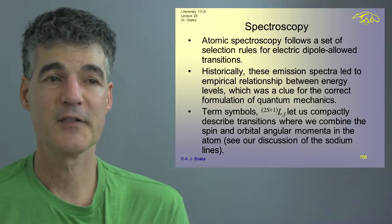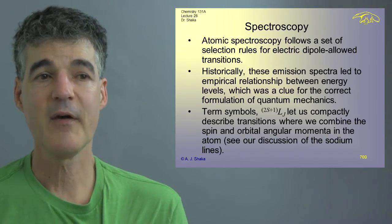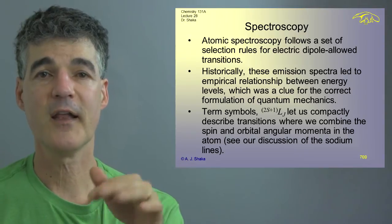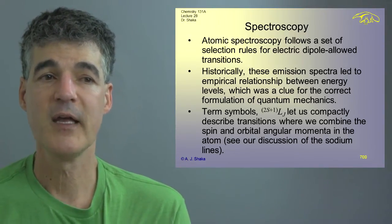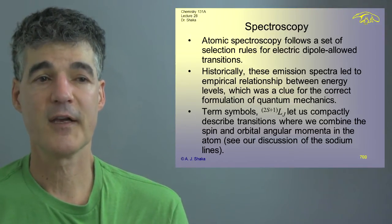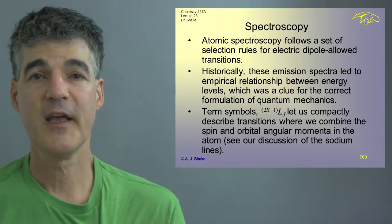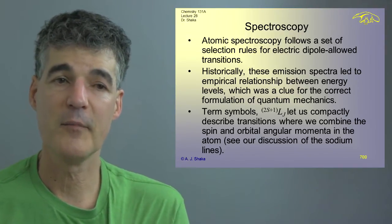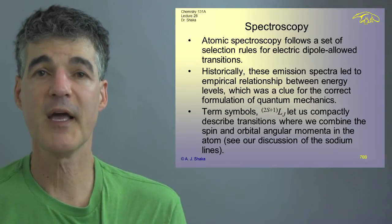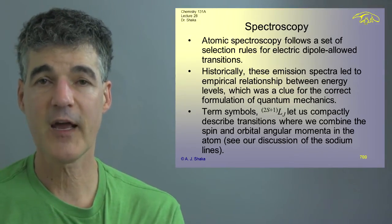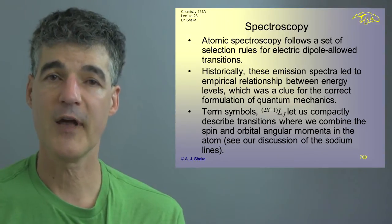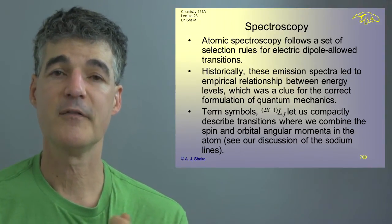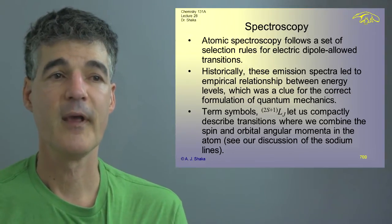But quantum mechanics then came along and explained those. But that was a very important clue. And then we talked about term symbols, which have the multiplicity 2S plus 1, where big S is all the electron spins added up according to the rules of angular momentum. L is the orbital angular momentum of all the electrons. And J is L plus S, which again follows the Clebsch-Gordon series which goes down by 1 until it reaches the absolute value of L minus S. And those term symbols are a very compact way to categorize and keep track of atomic transitions in things like sodium and other atoms, where we talked about the two yellow lines being very close, the two doublet P 3 halves and doublet P 1 half, both going to the doublet S 1 half.